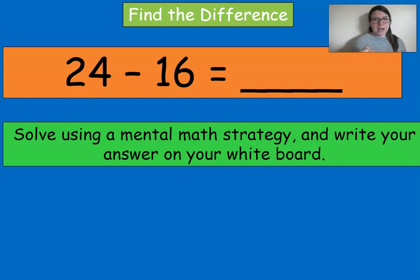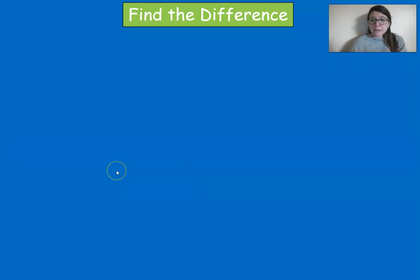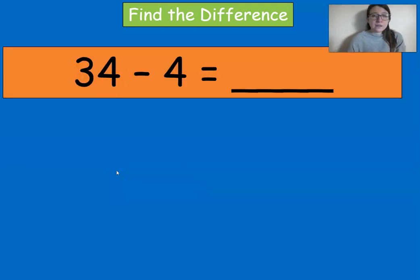Got it? What'd you get? Good. So what I saw in this problem is I can get 16 to 20, so I can add four, and if I do that, I have to add four to 28. So I get 28 minus 20, and I get a total of eight, just using compensation for that one. You could use any mental math strategy though.